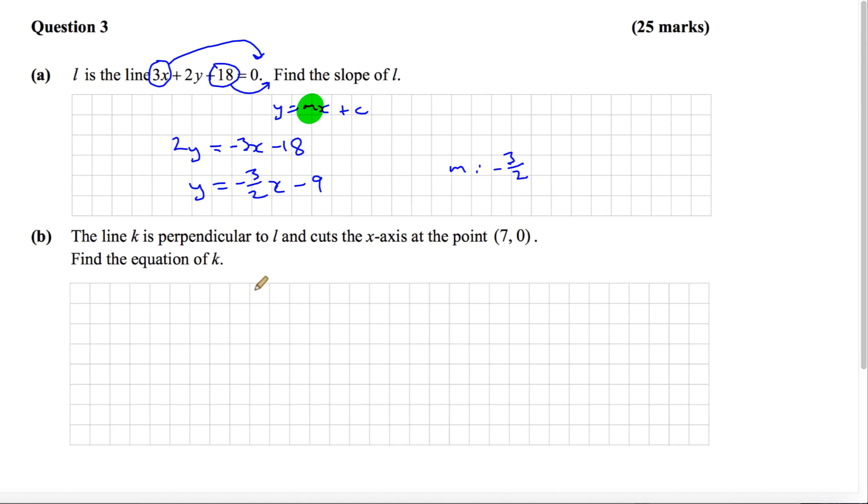Part B says the line k is perpendicular to l and cuts the x-axis at the point (7, 0). Find the equation of k. For finding the equation of a line, we have this formula from the tables book: y minus y1 equals m bracket x minus x1.